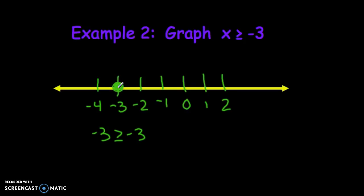Numbers that are bigger than or greater than negative 3 are to the right of negative 3, so like negative 2, negative 1, 0, 1, and 2. So my arrow is going to go to the right of negative 3 and all the way, because every number out here to the right is bigger than negative 3.